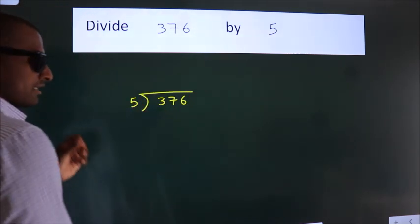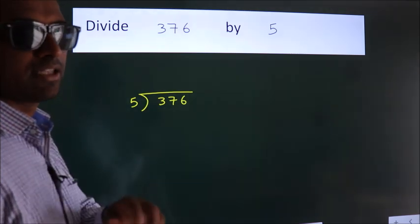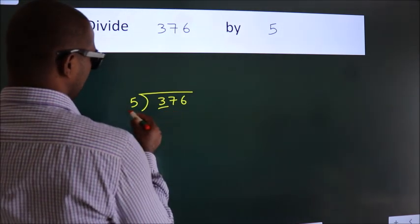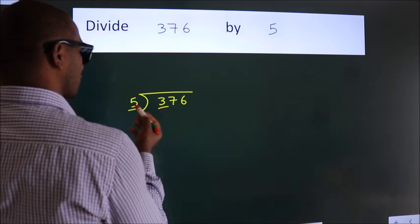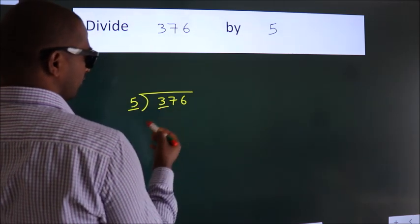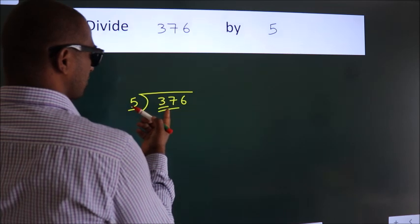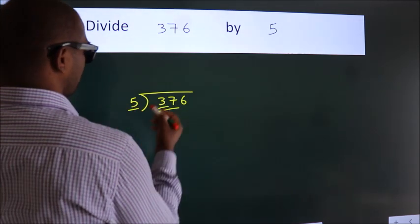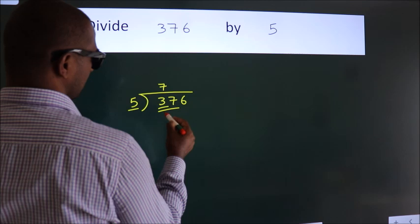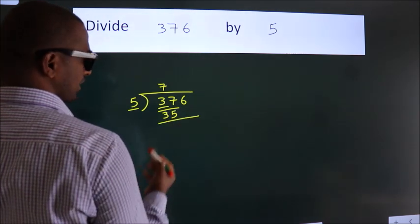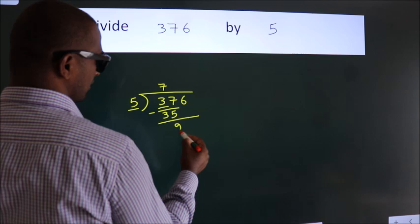This is your step 1. Next, here we have 3, here 5. 3 is smaller than 5, so we should take 2 numbers: 37. A number close to 37 in 5 table is 5 times 7 equals 35. Now, we should subtract. We get 2.